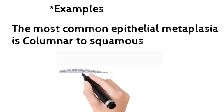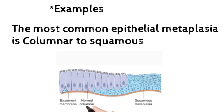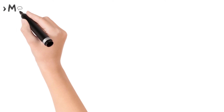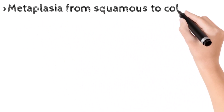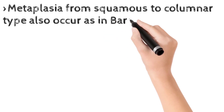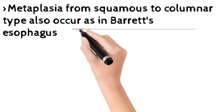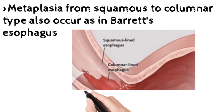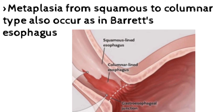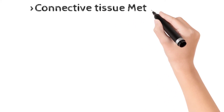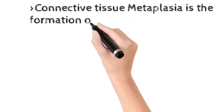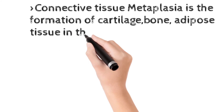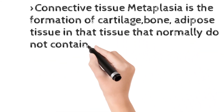The most common epithelial metaplasia is columnar to squamous. In the diagram, normal columnar cells change into squamous cells — this is squamous metaplasia. Metaplasia from squamous to columnar also occurs, such as in Barrett's epithelium due to gastroesophageal reflux syndrome, where normal squamous epithelium in the esophagus changes into columnar epithelium. Connective tissue metaplasia also occurs, involving cartilage formation, adipose tissue formation, or bone formation in structures where these elements are normally absent.